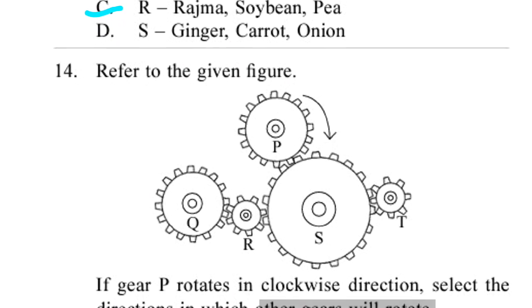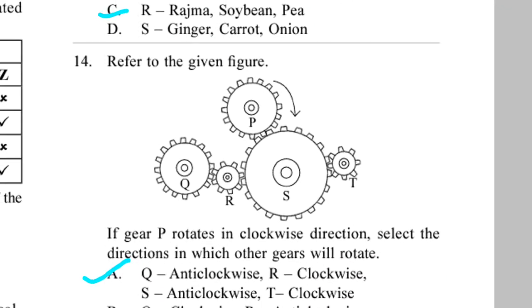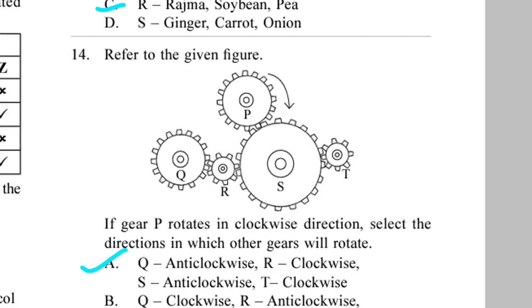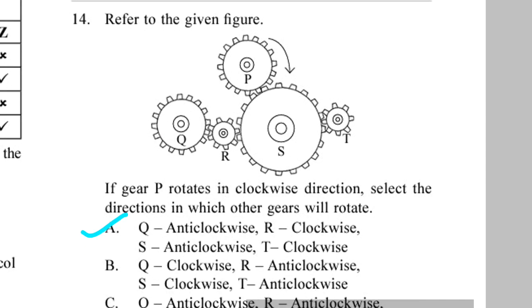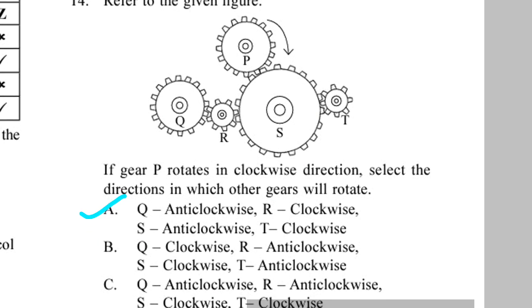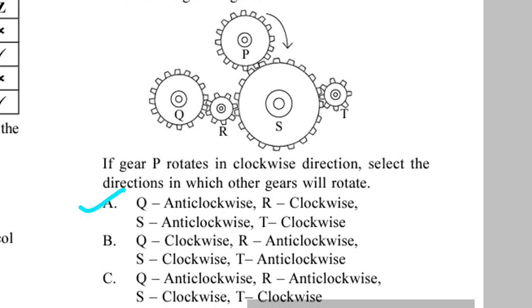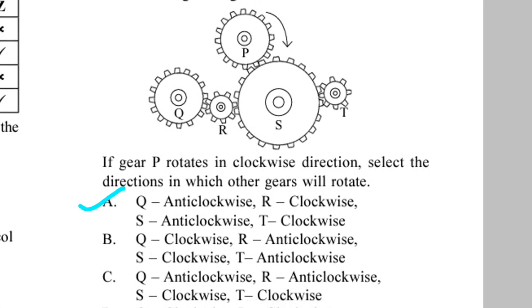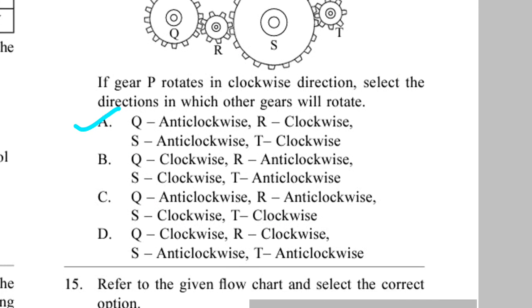Question 14. Refer to the given figure. If gear P rotates in clockwise direction, select the directions in which other gears will rotate. Now here P is rotating in clockwise, so S will rotate anticlockwise and T will rotate clockwise, and R will rotate clockwise and Q will rotate anticlockwise. So option A is the correct answer.